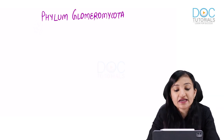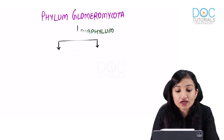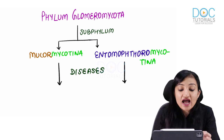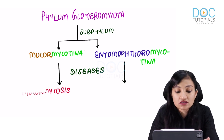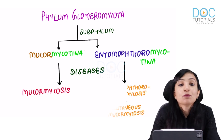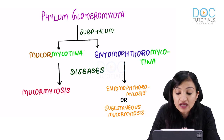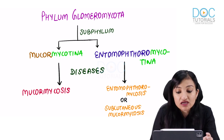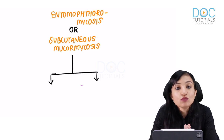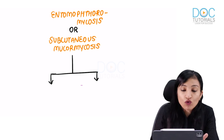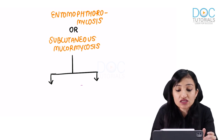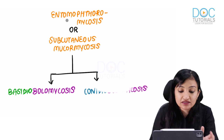As per the latest classification, we have Phylum Glomeromycota with two important subphyla: Mucoromycotina and Entomophthoromycotina. The diseases they cause are Mucoromycosis and Entomophthoromycosis, also known as subcutaneous Mucoromycosis. These subphyla respectively contain the orders Mucorales and Entomophthorales.